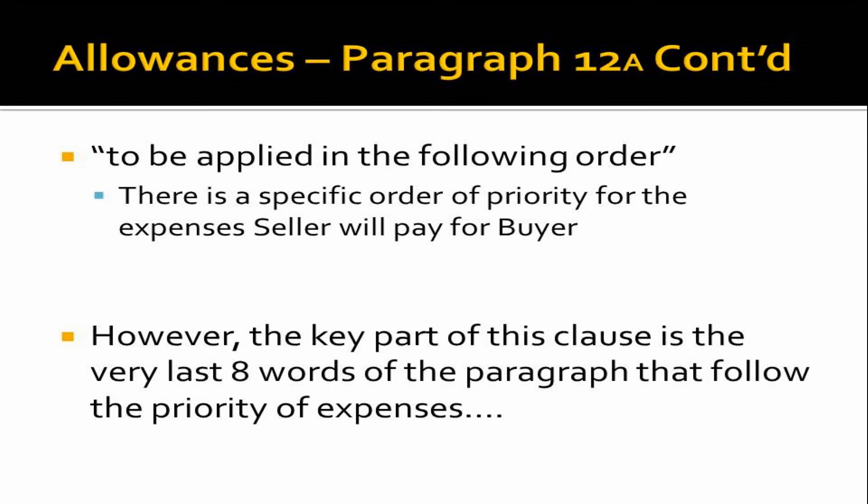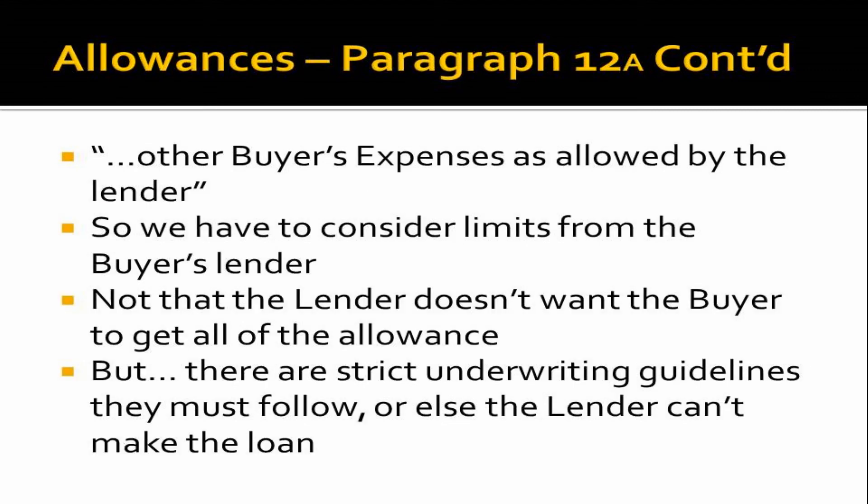There is a specific order of priority for expenses the seller will pay for the buyer. Sometimes, especially with FHA or VA loans, there are specific loan charges the buyer cannot pay and the seller must pay. Then ultimately, expenses flow to other things the lender allows. The last eight words regarding priority — 'other buyer's expenses as allowed by lender' — are the key. We have to take into consideration any limits the lender or loan program might put on the cap stated in 12A.